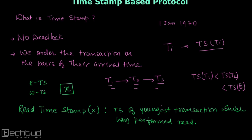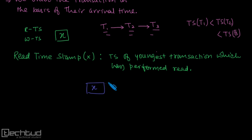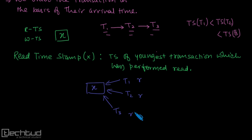What this means is: for variable X, if there are multiple transactions T1, T2, T3 which have performed read operations on it, we check which of these transactions is the youngest.